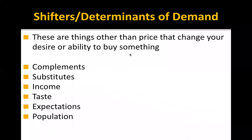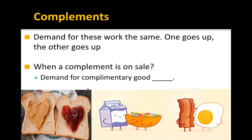Those things are called the shifters or determinants of demand — things other than price that can change your desire or ability to buy a product. They are: complements, substitutes, income, taste or popularity, expectations about the future, and the overall population of an area or the demographic group for that product.